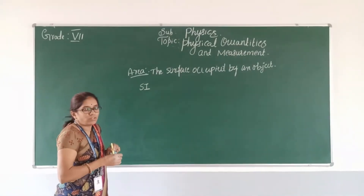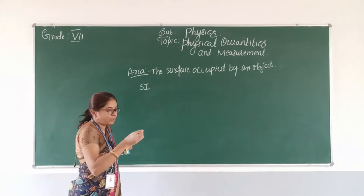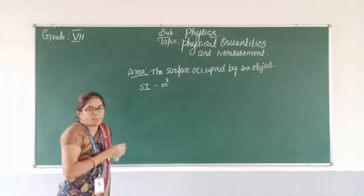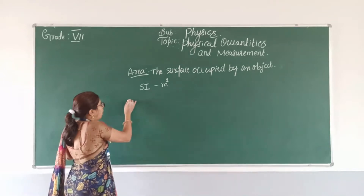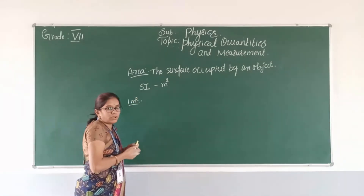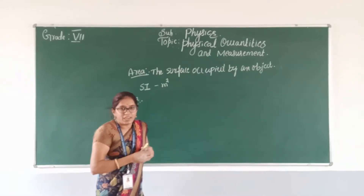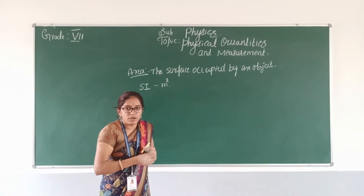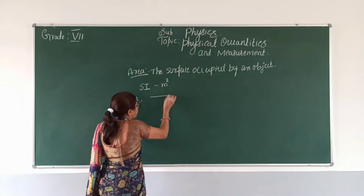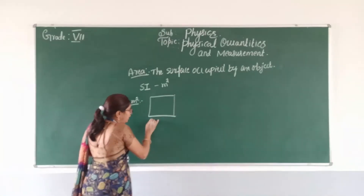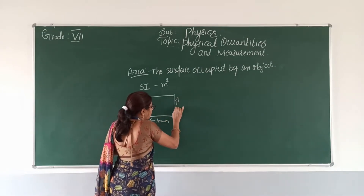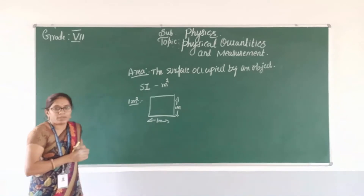The SI unit of area is meter square, symbolically represented with the power 2. So how we can define 1 meter square: 1 meter square is a square whose each side is equal to 1 meter. In the square, each side is equal to 1 meter, so that is equal to 1 meter square.